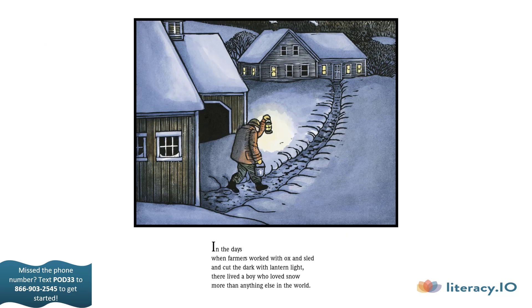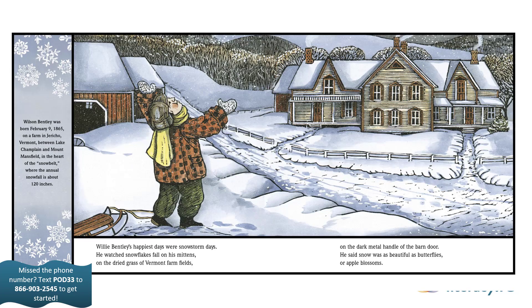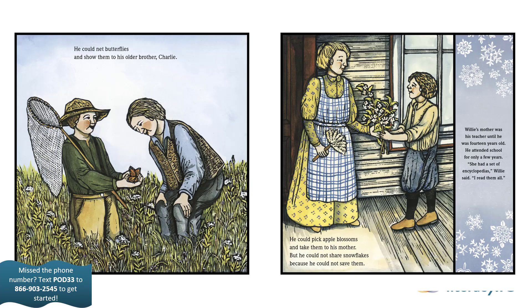In the days when farmers worked with ox and sled and cut the dark with lantern light, there lived a boy who loved snow more than anything else in the world. Willie Bentley's happiest days were snowstorm days. He watched snowflakes fall on his mittens, on the dried grass of Vermont fields, on the dark metal handle of the barn door. He said snow was as beautiful as butterflies or apple blossoms. Wilson Bentley was born February 9th, 1865, on a farm in Jericho, Vermont, between Lake Champlain and Mount Mansfield in the heart of the snow belt, where the annual snowfall is about 120 inches. He could net butterflies and show them to his older brother Charlie. He could pick apple blossoms and take them to his mother. But he could not share snowflakes because he could not save them.